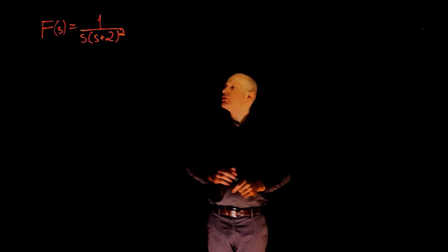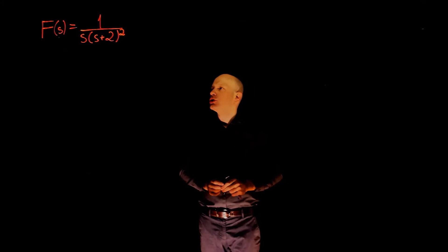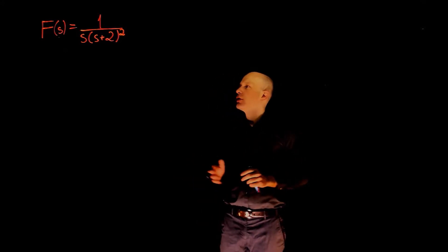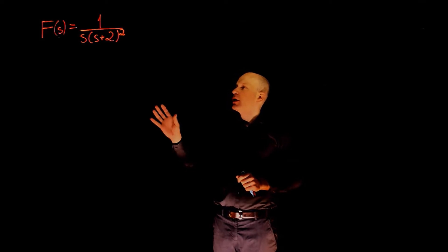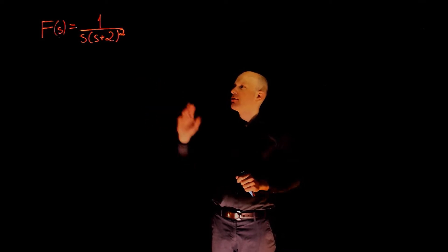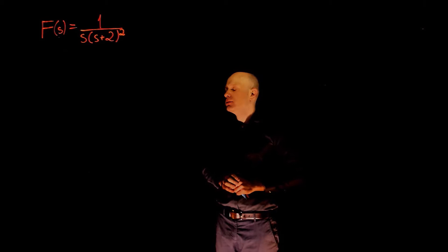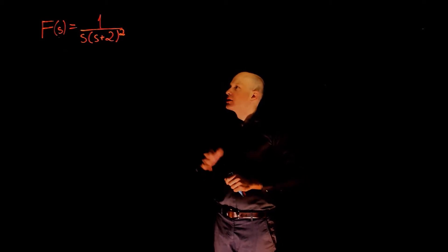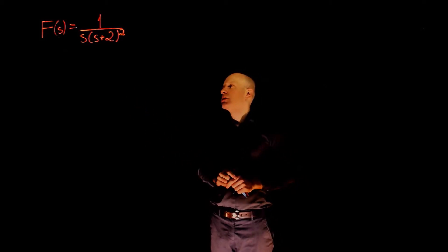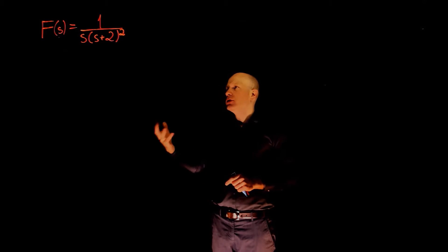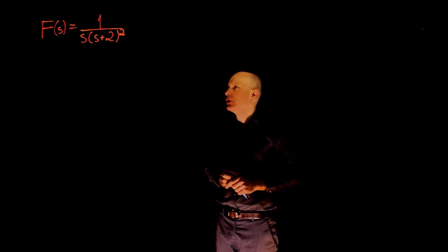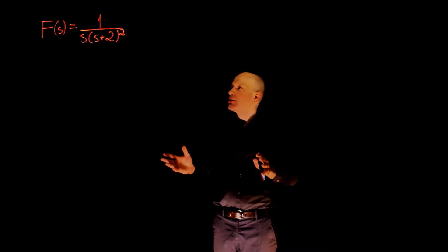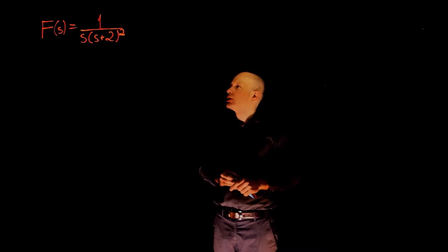In this example, we are looking for the inverse Laplace transform of f(s) and the final value of that function. There are two ways to find the final value: the first is to apply the final value theorem to f(s) directly in the s-domain, and the second is to find the inverse Laplace of f(s) first, f(t), and then find the limit of f(t) when time tends to infinity. Let's try both ways to compare the results.